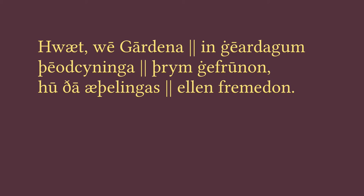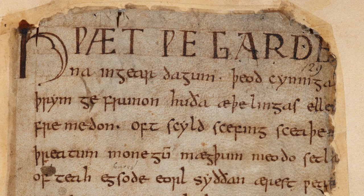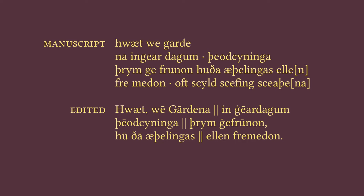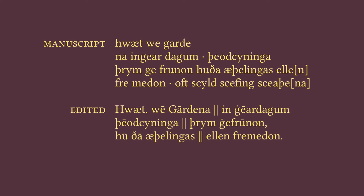But even before we talk about what it means or what it sounds like, I want to point out that what I'm showing you here is not what the text looks like in the actual manuscript where Beowulf is written. That manuscript — and there's only one of them — looks like this. Notice that there are no markings above the letters, no vertical lines. The different lines of poetry aren't even on different lines. Writing the text in that way, where each poetic line appears on a different line on the page, is a modern editorial choice.